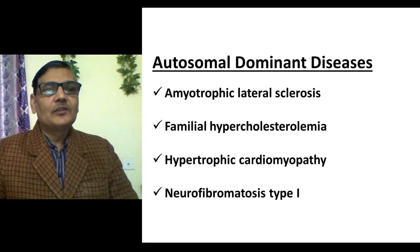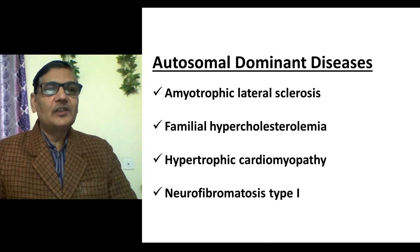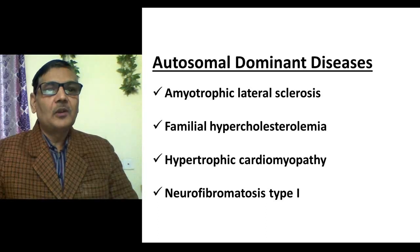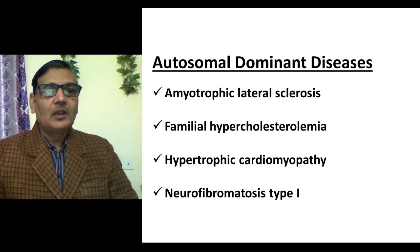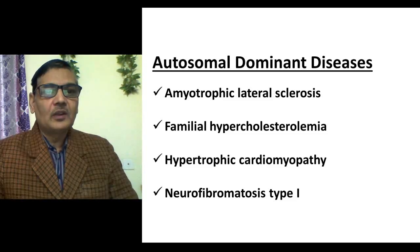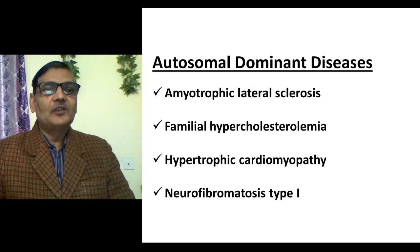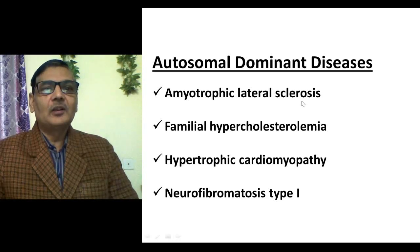Some diseases which are autosomal and dominant in nature include amyotrophic lateral sclerosis, familial hypercholesterolemia, hypertrophic cardiomyopathy, and neurofibromatosis type 1. In every case, the pattern of assessment will be exactly the same.